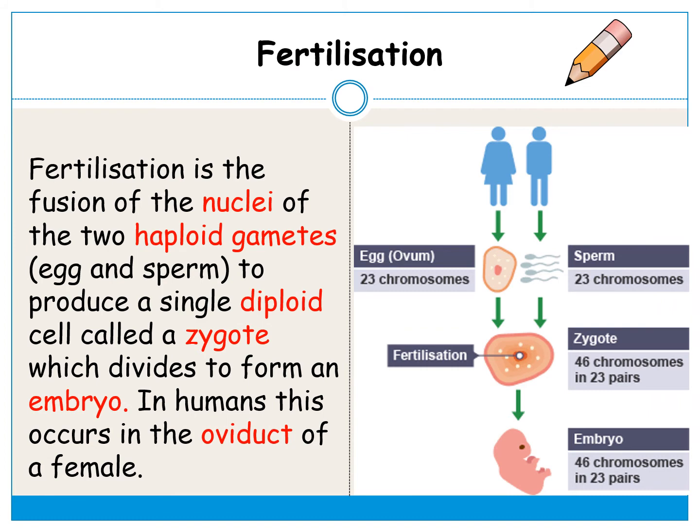You now need to learn the definition of fertilization — write it out many times and say it over and over until you know it. Fertilization is the fusion of the nuclei of two haploid gametes — that would be the egg and the sperm — to produce a single diploid cell called a zygote, which divides to form an embryo. In humans this occurs in the oviduct of a female.